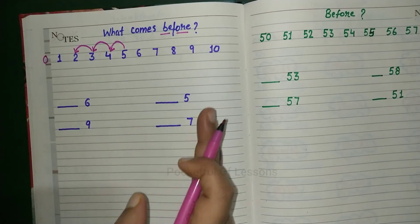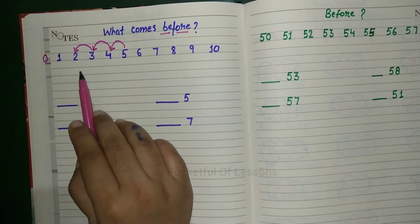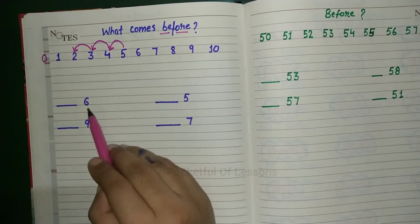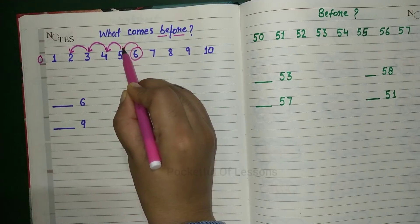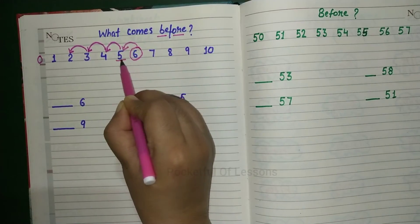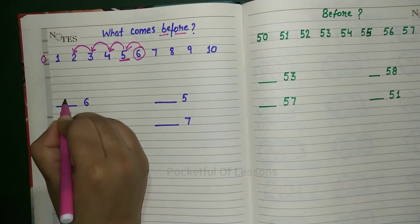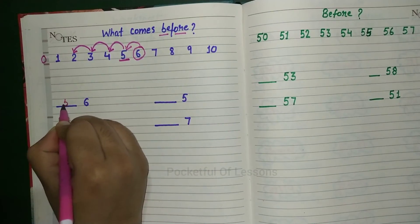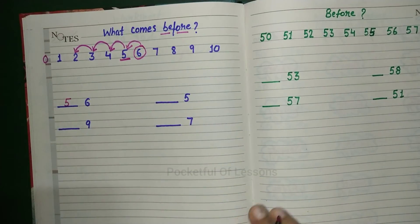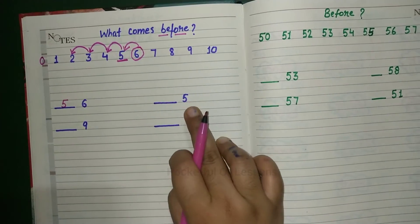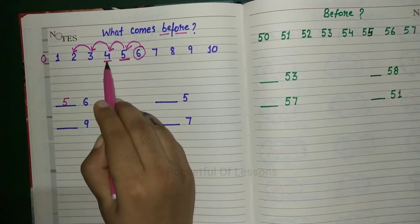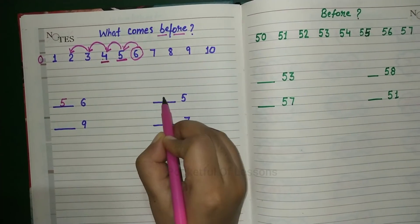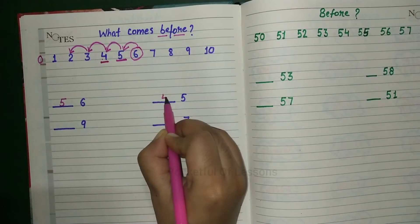Which number comes first? Check here — where is the 6? Here is your 6. Now which number is before 6? 5. So you will write 5 here. Then, before 5 — which number comes before 5? 4. You will write 4 here.